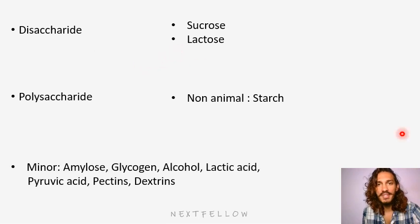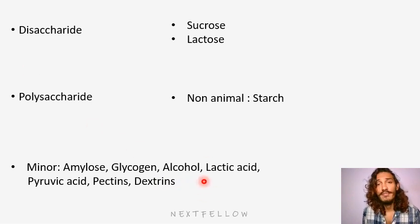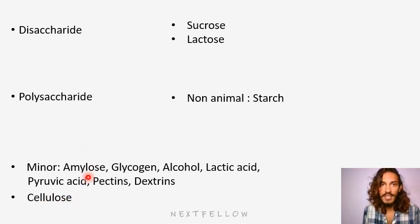Apart from the minor ones which include amylose, glycogen, alcohol, lactic acid, pyruvic acid, pectin, dextrin, and some other minor carbohydrates in animals — so in the meat. Apart from this, there is also cellulose. Please remember that cellulose is something that we humans cannot digest.